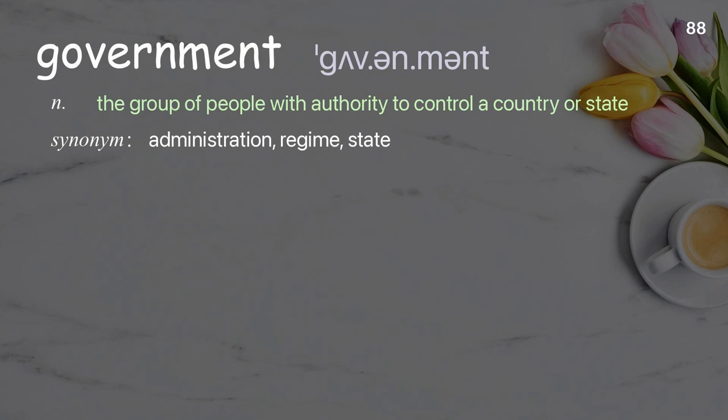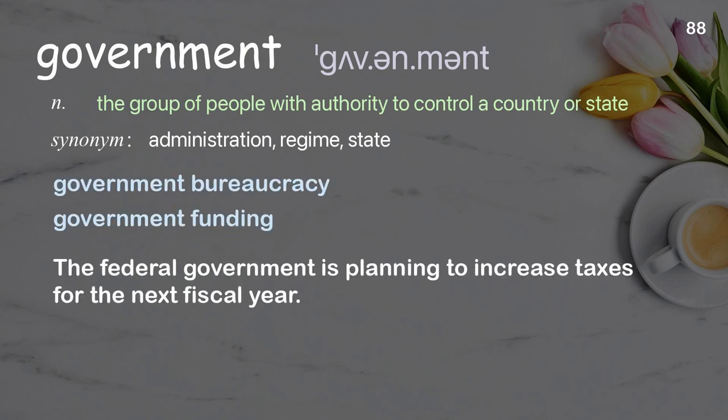Government: the group of people with authority to control a country or state. Examples: government bureaucracy, government funding. The federal government is planning to increase taxes for the next fiscal year.